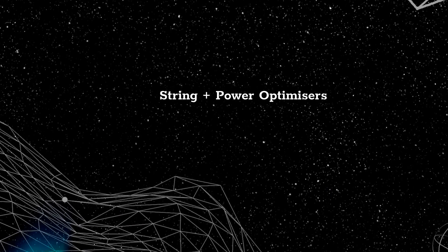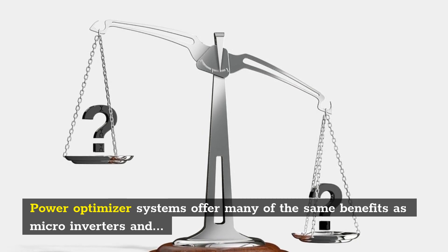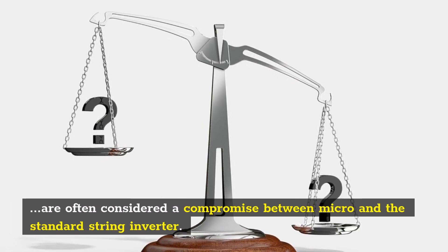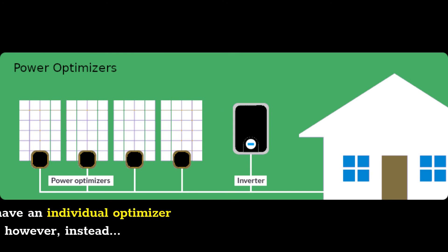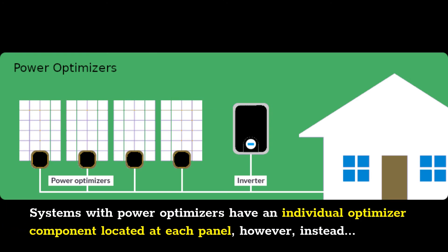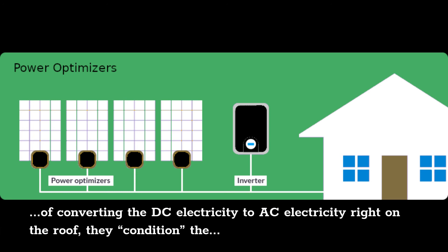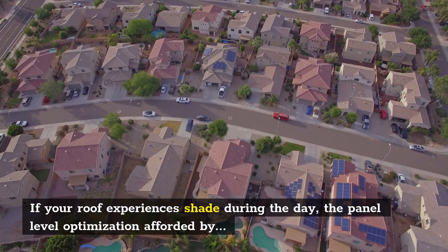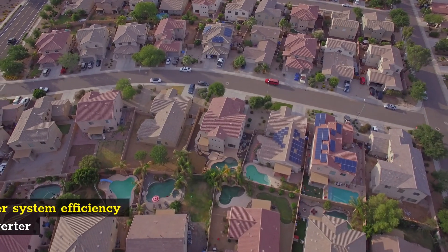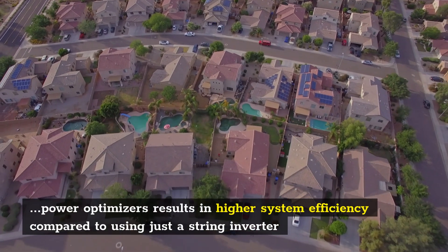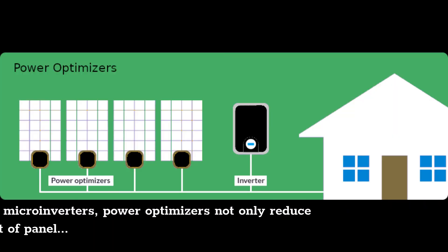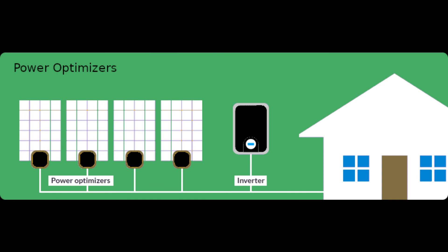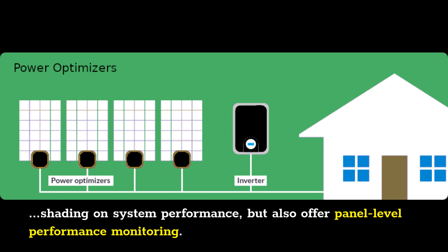String Plus Power Optimizers: Power optimizer systems offer many of the same benefits as microinverters and are often considered a compromise between micro and the standard string inverter. How Power Optimizers Work: Systems with power optimizers have an individual optimizer component located at each panel. However, instead of converting the DC electricity to AC electricity right on the roof, they condition the DC electricity and send it to a string inverter for DC to AC conversion. If your roof experiences shade during the day, the panel-level optimization afforded by power optimizers results in higher system efficiency compared to using just a string inverter. Similar to microinverters, power optimizers not only reduce the impact of panel shading on system performance, but also offer panel-level performance monitoring.